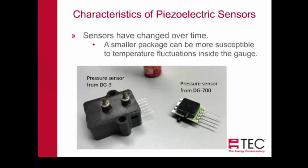Pressure measurement is very susceptible to changes in temperature. The smaller package, while more desirable for packaging, is now more susceptible to temperature fluctuations inside the gauge. The sensor on the left — from the DG3 — has much more mass, so any temperature effect takes longer to meaningfully affect the values. The smaller DG700 sensor has a much smaller body, so we have to consider what the internal temperature gains of the gauge are.